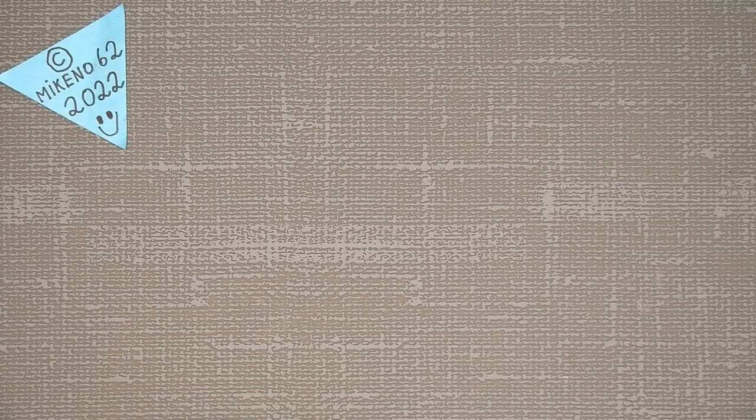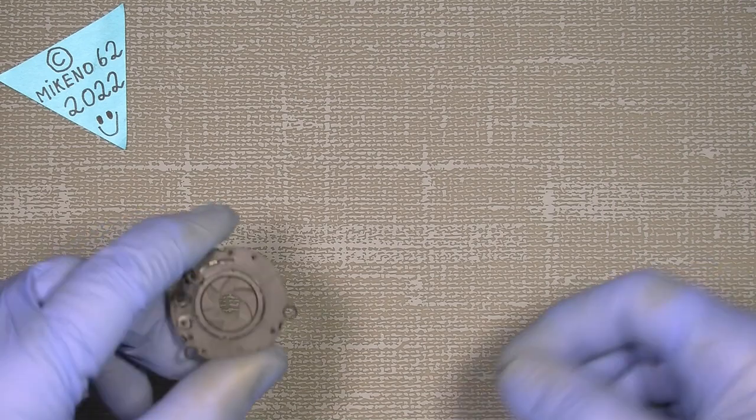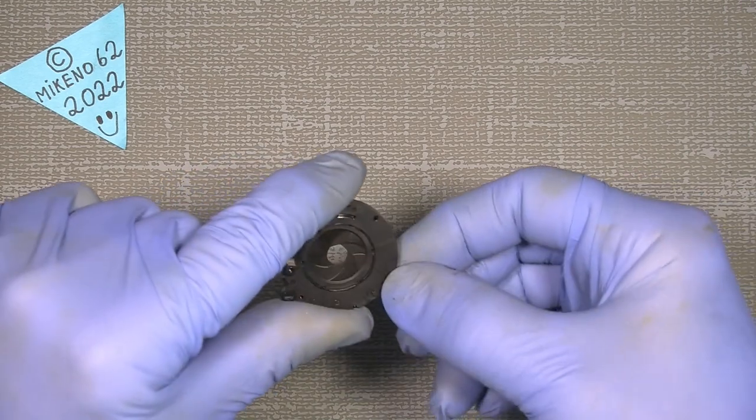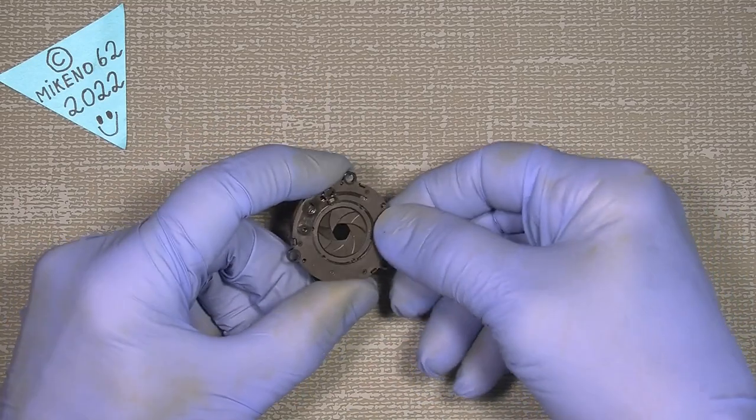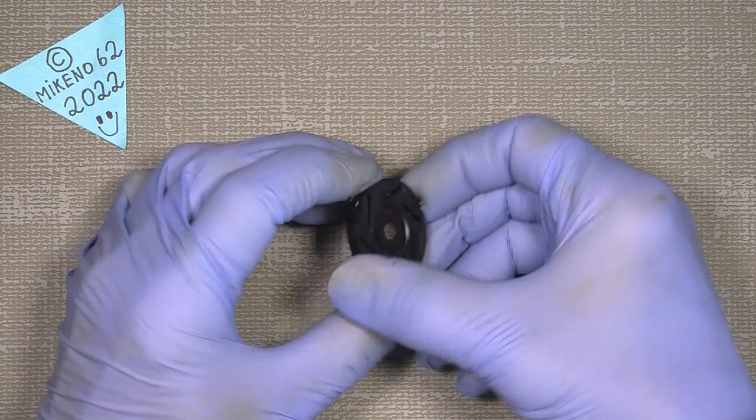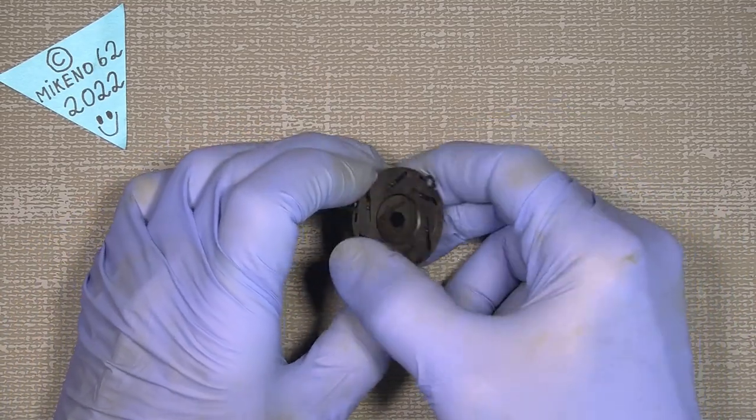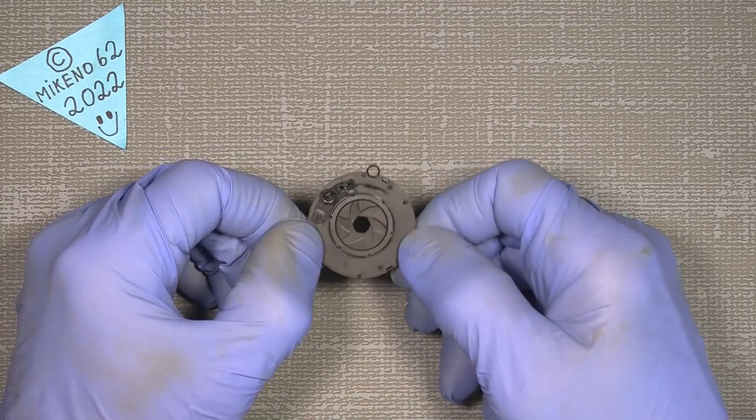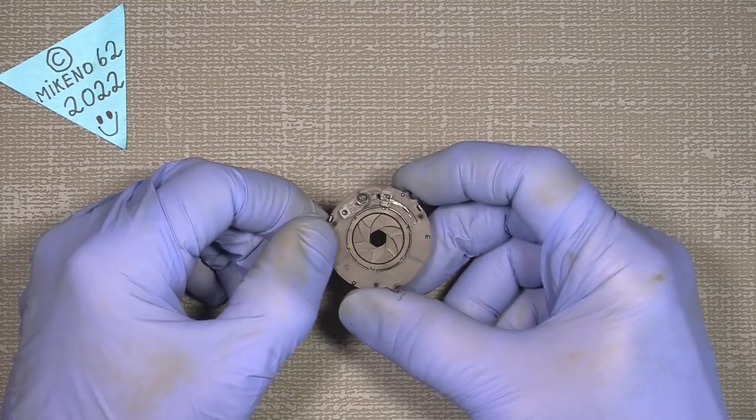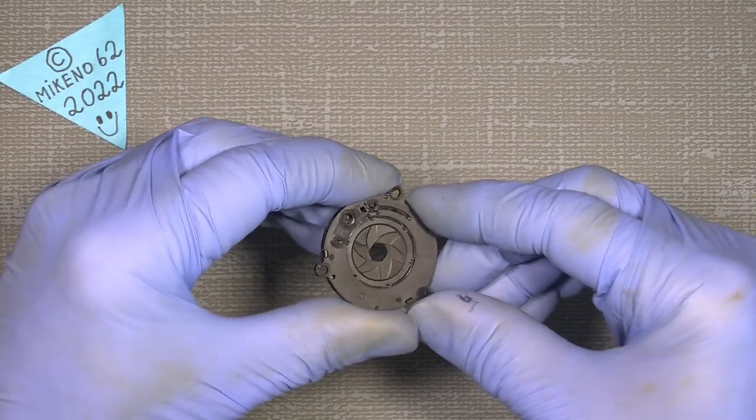Hello everybody and welcome to another tutorial in camera and lens repair. This time I was wondering what will happen if I use, I mean normally I use isopropyl alcohol 99% to clean aperture plates and it works absolutely great.